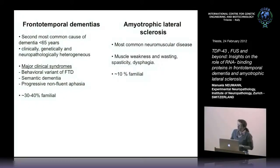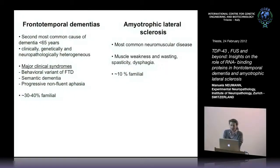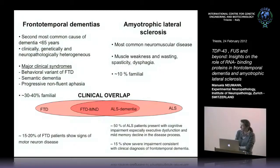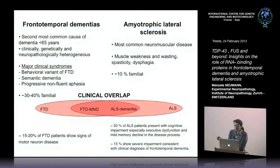The second disease we are interested in is amyotrophic lateral sclerosis, the most common neuromuscular disease. These patients have predominant atrophy of the first and second motor neurons resulting in muscle weakness and wasting, with about 10 percent being familial. There is a striking clinical overlap between both diseases, with about 50 percent of ALS patients having some signs of cognitive impairment, and in about 15 percent this is severe enough to warrant an additional diagnosis of frontotemporal dementia.